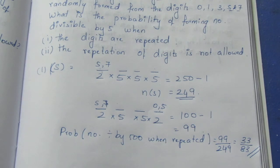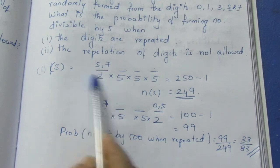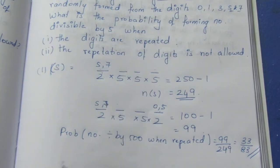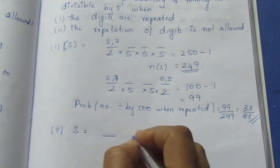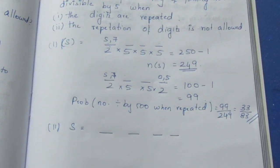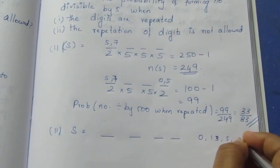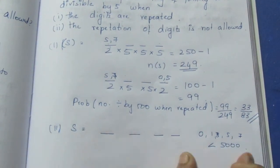Now let's go to the second subdivision. Repetition of digits is not allowed. The digits available are 0, 1, 3, 5, 7, and we need 4-digit numbers greater than 5000.